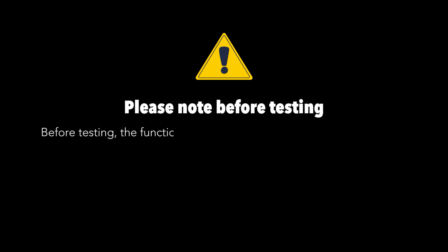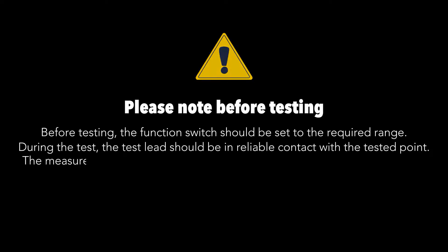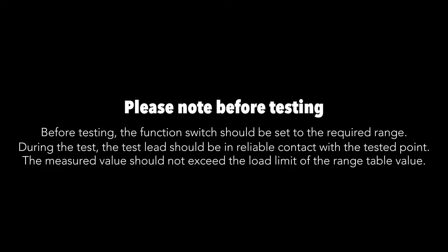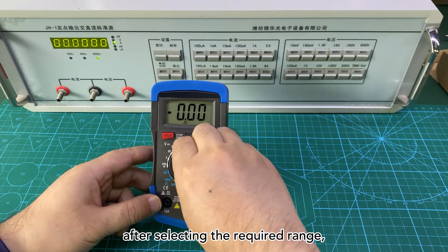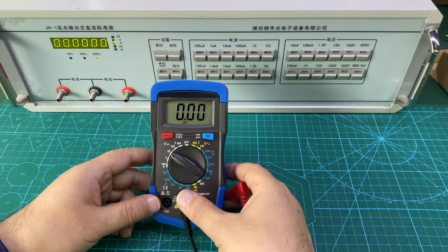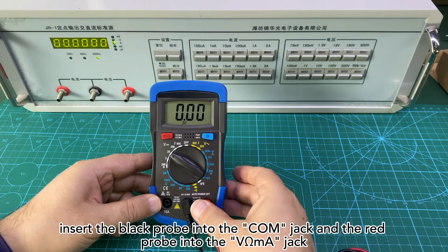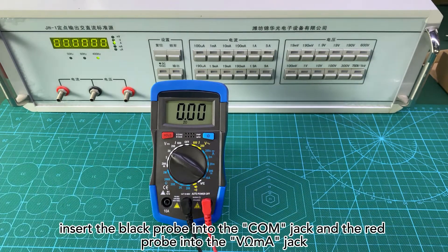Please note before testing AC and DC voltage, test before the test after selecting the required range. Insert the black probe into the COM jack and the red probe into the V-Omega MA jack.